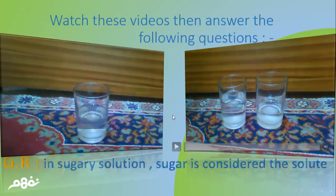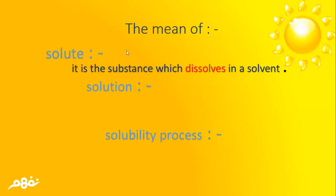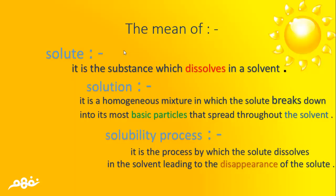Give reason: in a sugary solution, sugar is considered the solute because it dissolves in the solvent, water, to form the solution. The meaning of solute: it is the substance which dissolves in a solvent. Solution: it is a homogeneous mixture in which the solute breaks down into very small particles that spread throughout the solvent. Solubility process: it is the process by which the solute dissolves in the solvent, leading to the disappearance of the solute.